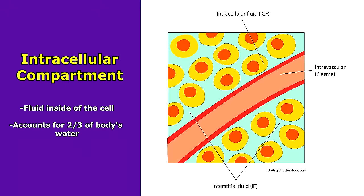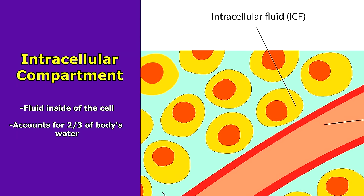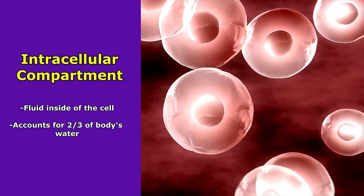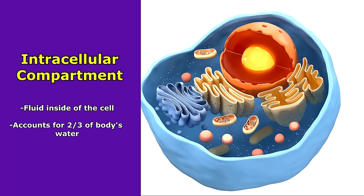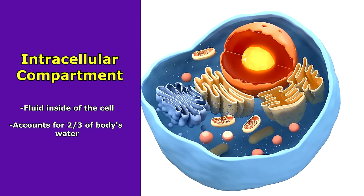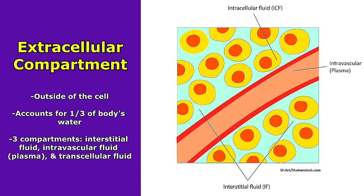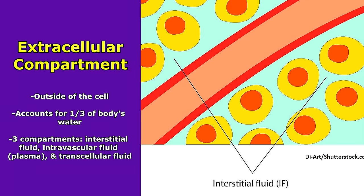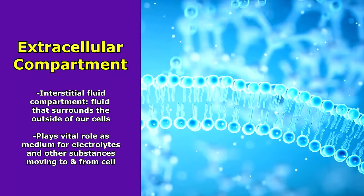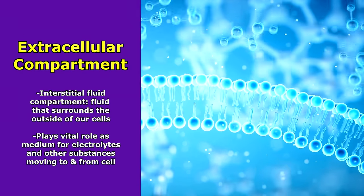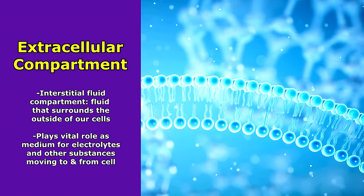The intracellular space is the fluid found inside of the cell, and this space actually accounts for two-thirds of our body water — so most of our fluid is inside our cells. The extracellular space is the fluid outside of the cell and accounts for one-third of our body water. It includes the interstitial fluid compartment, which is the fluid that surrounds the outside of our cells.